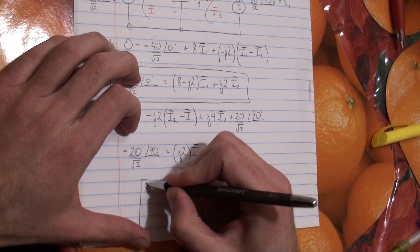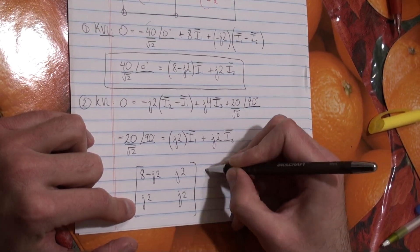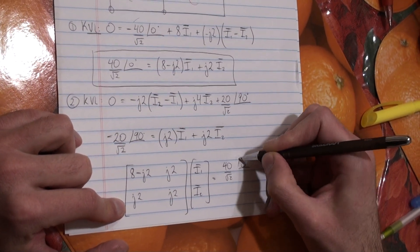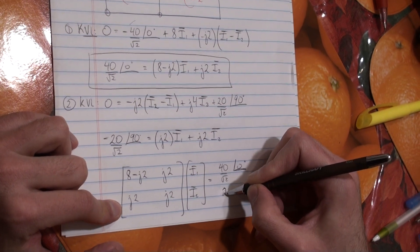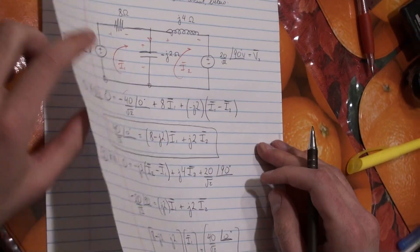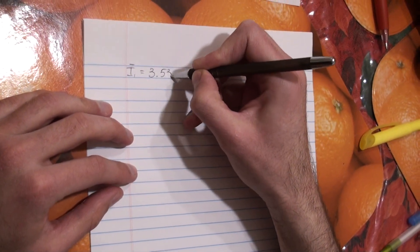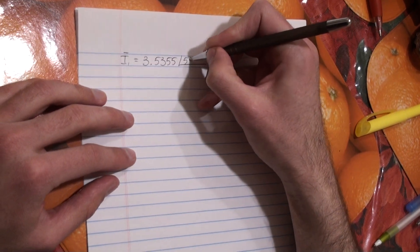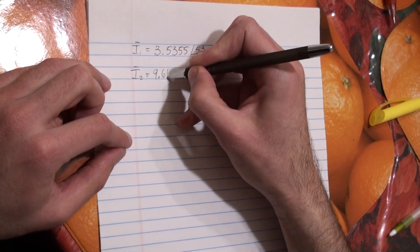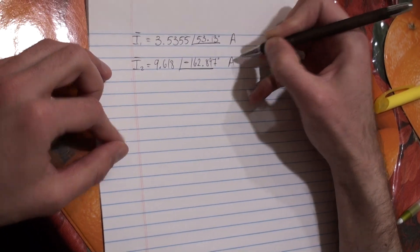We can put this in matrix form. The top row is [8 − J2, J2] and the bottom row is [J2, J2], multiplied by [I1, I2]. The constants are 40 over root 2 at angle 0, and minus 20 over root 2 at angle 90. Using Cramer's rule, we find I1 = 3.5355 at angle 53.13°, and I2 = 9.618 at angle −162.897°. So now we have our currents.